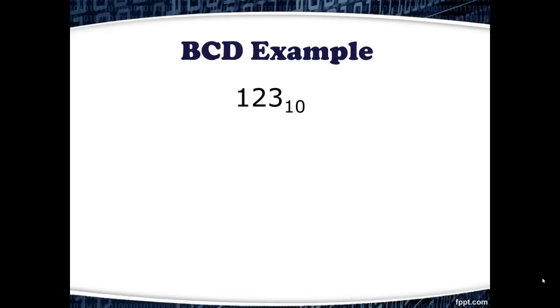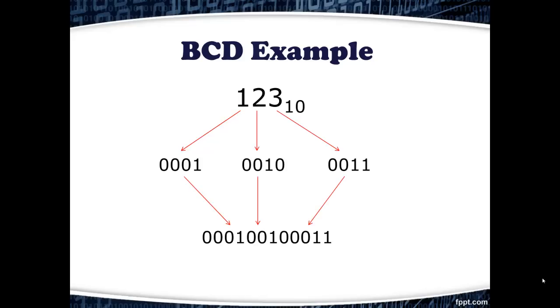Here's an example. Suppose we have the number 123 in base 10, and we want to convert it to its Binary Coded Decimal equivalent. Each of the digits in 123 can be encoded as a 4-bit sequence. By combining these three 4-bit sequences, we end up with a 12-bit value, and this is the Binary Coded Decimal form of 123.